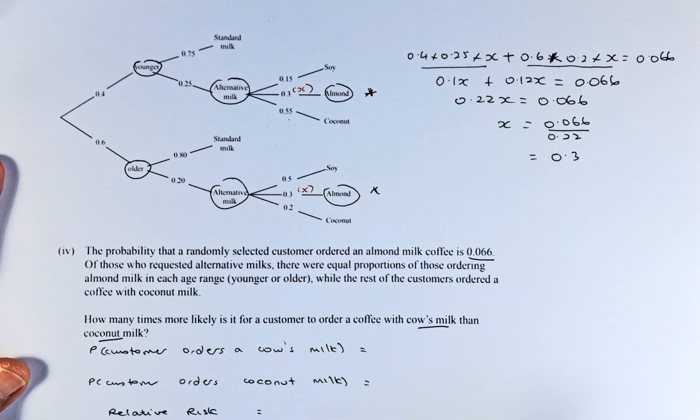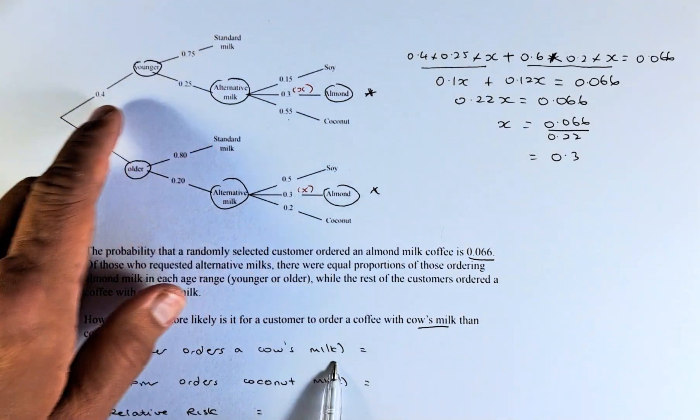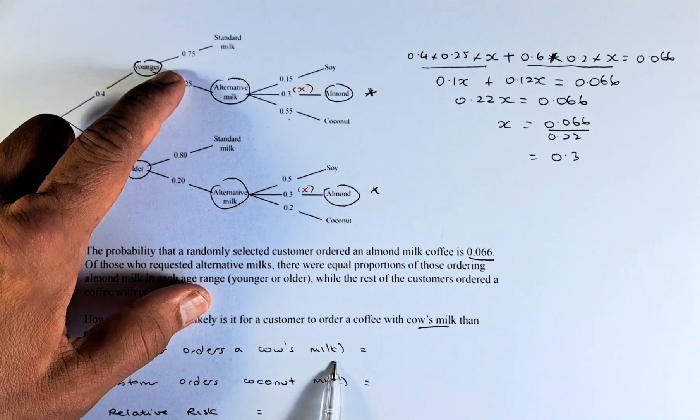To do that, we need to calculate what is the probability that a customer orders with cow's milk. To calculate that, it's straightforward. Cow's milk is standard milk. So it's going to be 0.4 x 0.75.